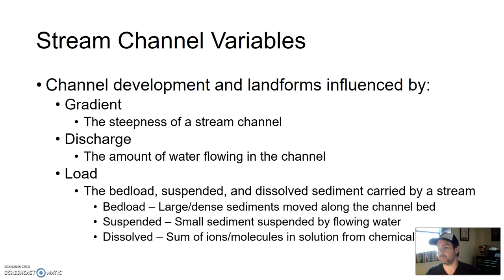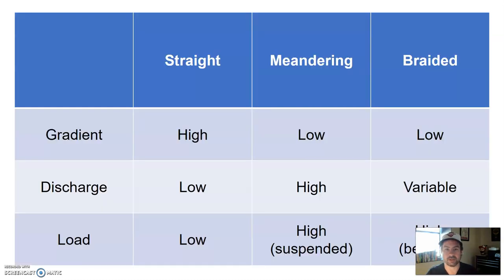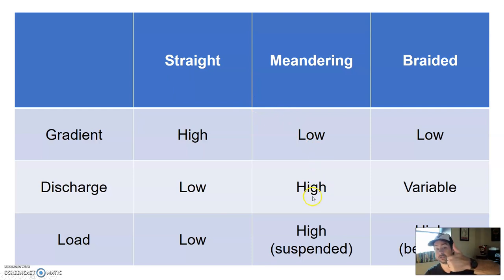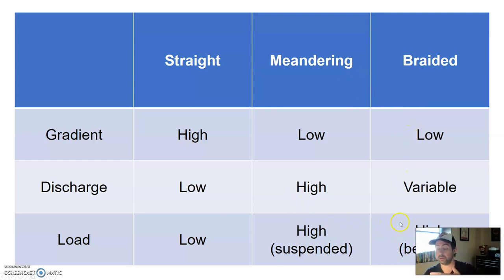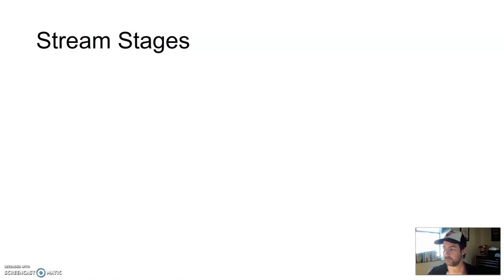Depending on gradient, discharge, and load, we can predict the stream channel type. High gradient, low discharge, and low load — mostly water — typically produces straight stream channels. Lower gradient, high discharge, and high suspended load produces meandering streams. Low gradient with variable discharge but high bed load — more and larger material — you're more likely looking at a braided stream channel.